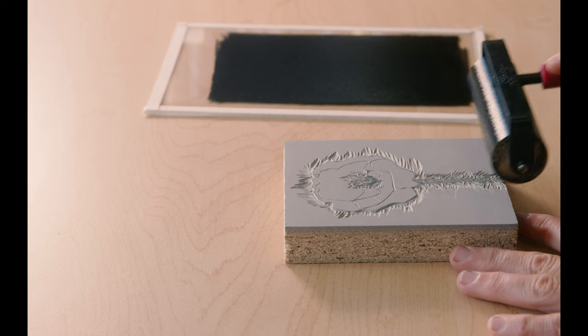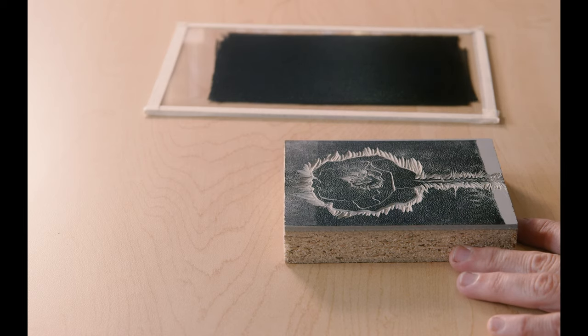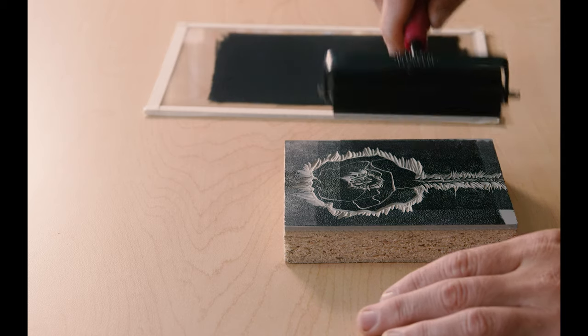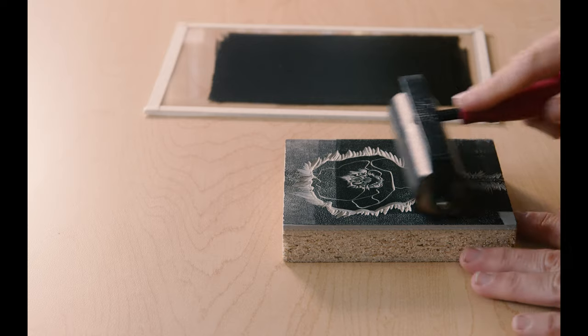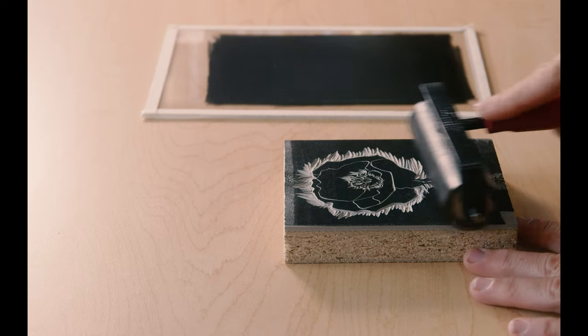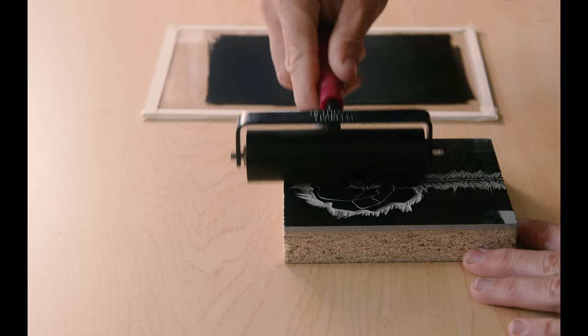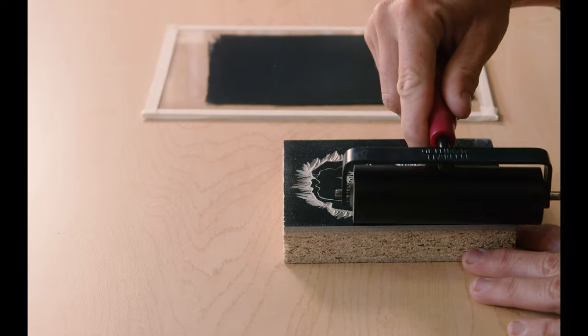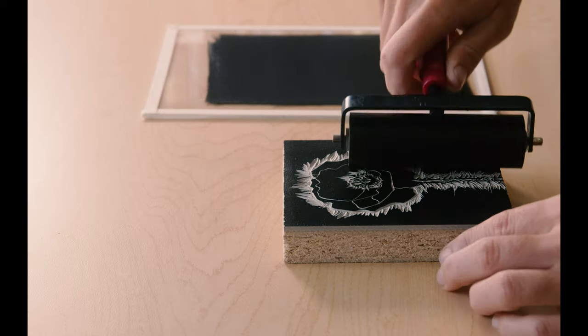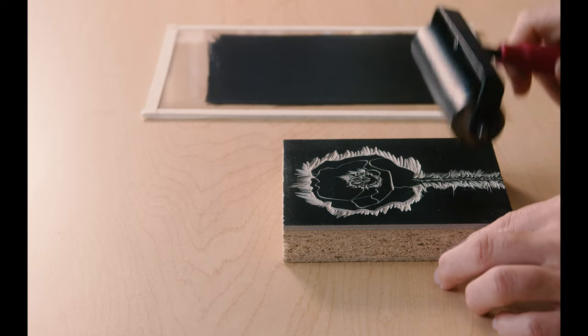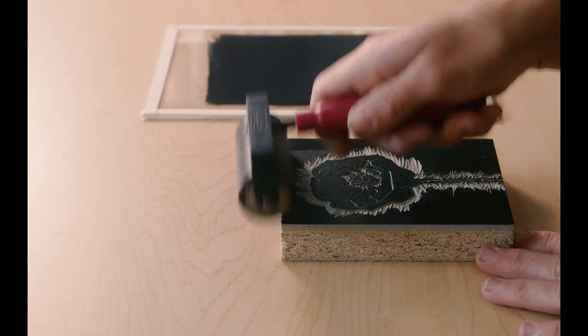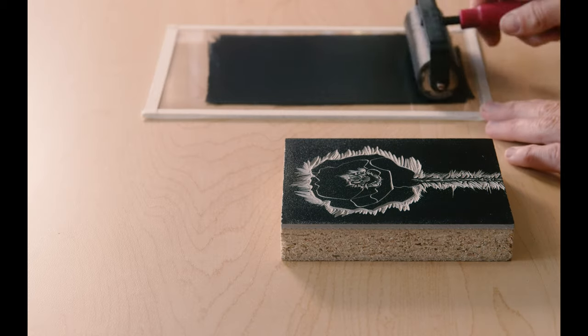What you don't want to do is just roll it once and be like, oh it's inked. You want to keep getting ink on your brayer and rolling in all different directions. And you do want to push down a little bit, make sure you get all the corners. You should be able to see if your entire block is inked evenly.